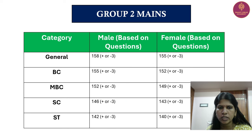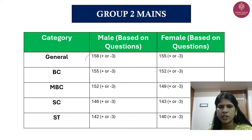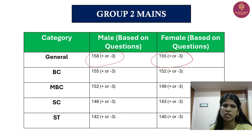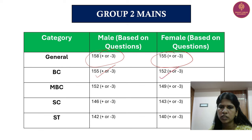Let's analyze Group 2 Mains. General category is 158 plus or minus 3 and female category is 155 plus or minus 3. BC is 155 plus or minus 3 and female is 152 plus or minus 3. MBC is 152 plus or minus 3.